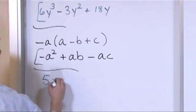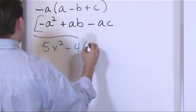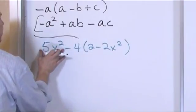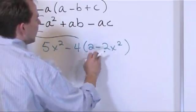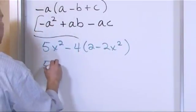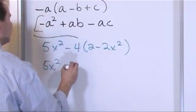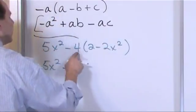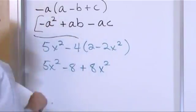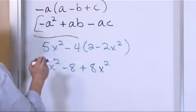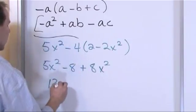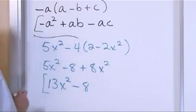What if we have (5x squared minus 4) times (2 minus 2x squared)? We need to distribute the negative four into the parenthesis: 5x squared stays, negative four times two is negative eight, and negative four times negative 2x squared — negative times negative is positive — gives positive 8x squared. Now look for like terms: 5x squared and 8x squared are like terms, five plus eight is thirteen. The answer is 13x squared minus 8.